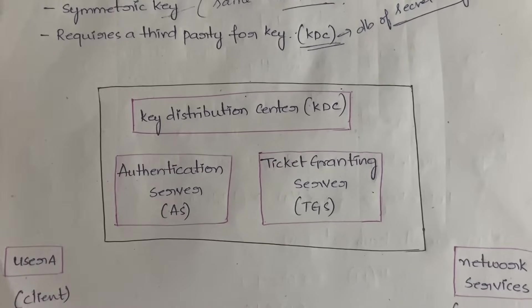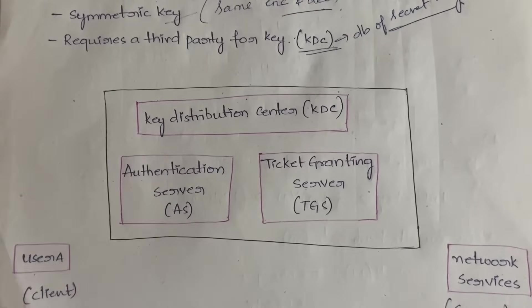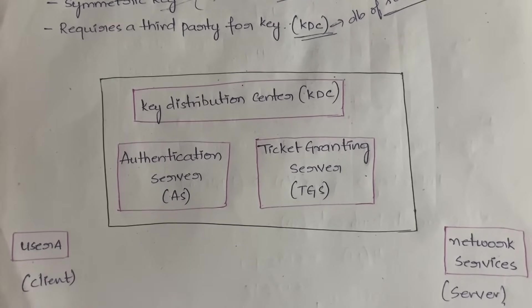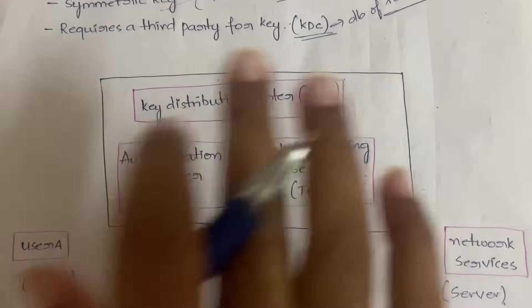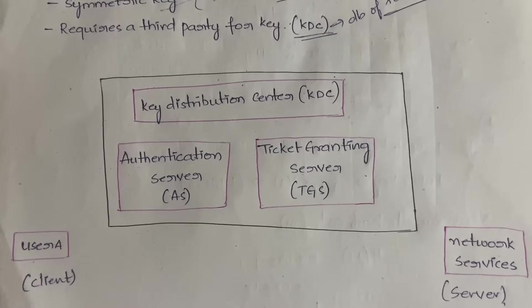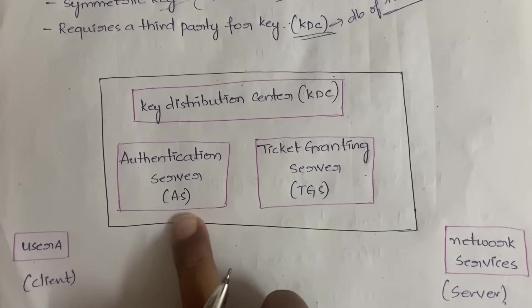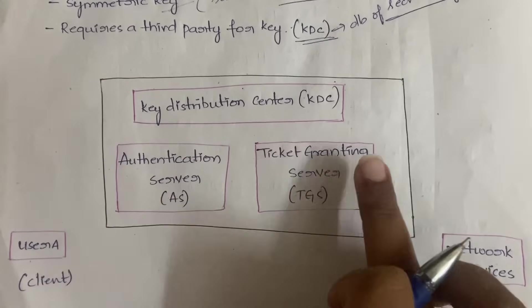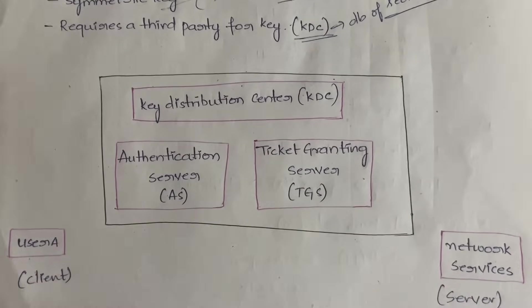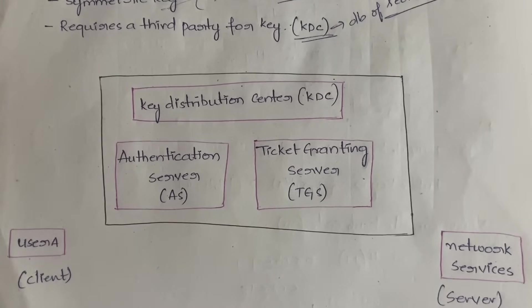In this diagram, every Key Distribution Center will have two things in it: one is the Authentication Server (AS), and the other is the Ticket Granting Service (TGS). So every KDC will have two servers. The Authentication Server checks for authenticity, and the Ticket Granting Server grants a ticket.